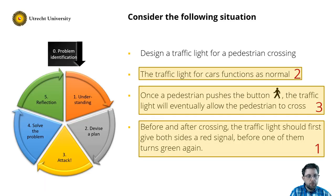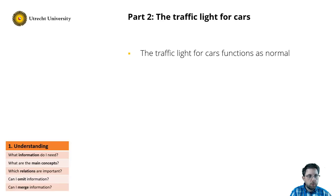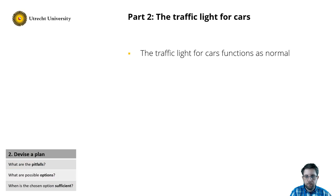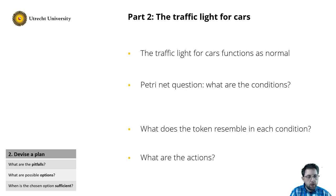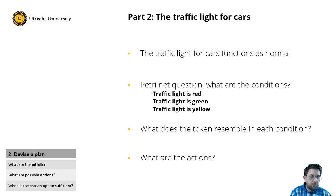Now let's move to part 2, the traffic light for cars. I think we understand the problem well, so let's directly move to the devise a plan stage. We need to ask ourselves 3 questions for Petri Net: what are the conditions? What are the tokens resembling in each condition? And what are the actions, and how do they change the conditions? In our traffic light there are 3 conditions: the traffic light is red, the traffic light is green, or it is yellow.